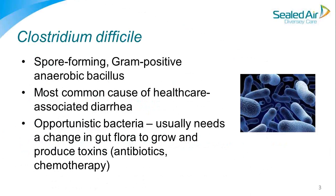Clostridium difficile has been around for a while — in my 35 years of healthcare, it's gone from a possible to a known cause of antibiotic-associated diarrhea. It is a spore-forming, gram-positive, anaerobic facultative organism and the most common cause of healthcare-associated diarrhea. Importantly, it is opportunistic: a change in gut microbiome is required for it to cause problems. Simply ingesting C. difficile in vegetative or spore form doesn't precipitate infection without antibiotic or chemotherapeutic disruption of normal gut flora.